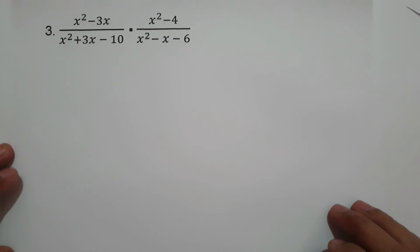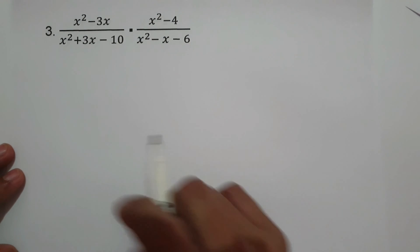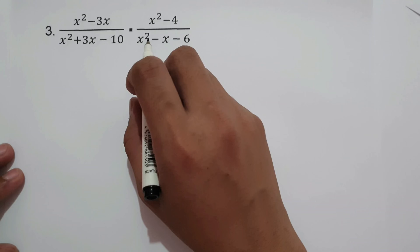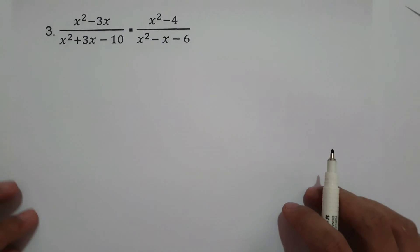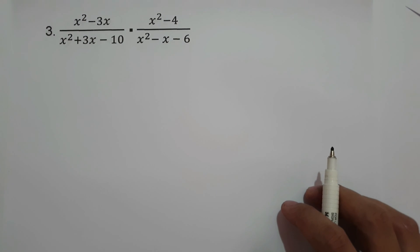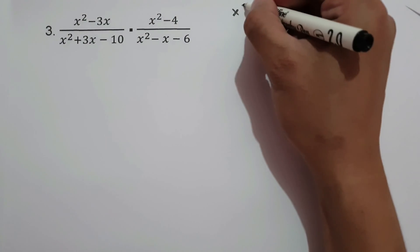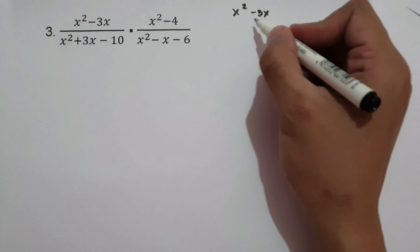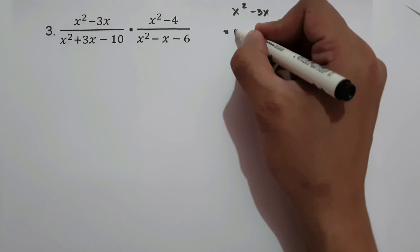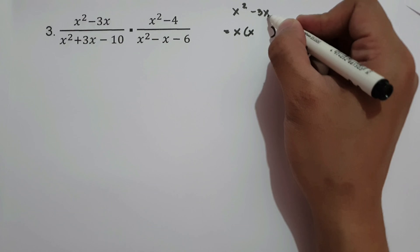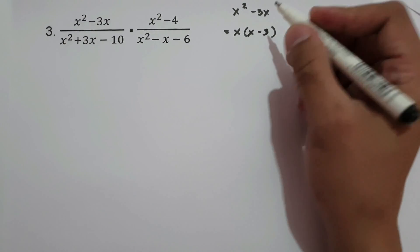For number 3, we have (x² − 3x)/(x² + 3x − 10) times (x² − 4)/(x² − x − 6). Before multiplying, let's find the factors of each expression. For x² − 3x, the greatest common factor is x, so it factors as x(x − 3). x² ÷ x = x and −3x ÷ x = −3.